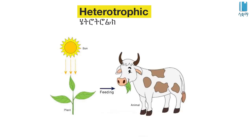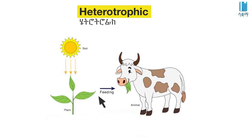Animals are heterotrophic — they cannot make their own food through photosynthesis, so they obtain energy by consuming other organisms.